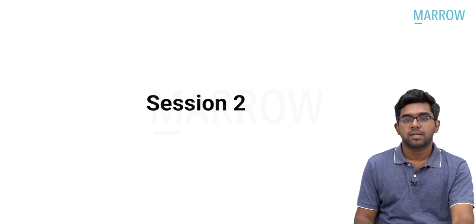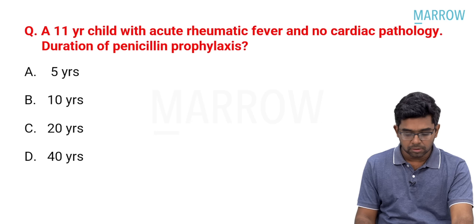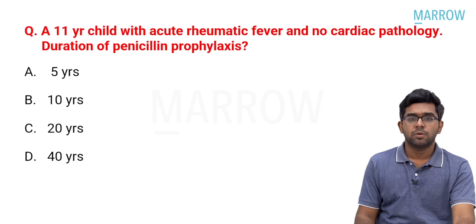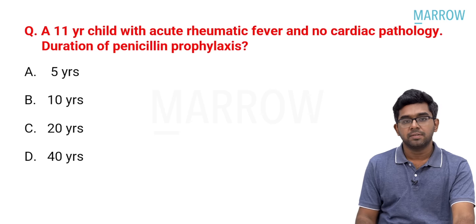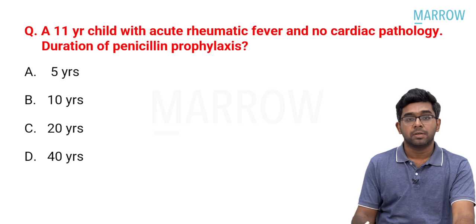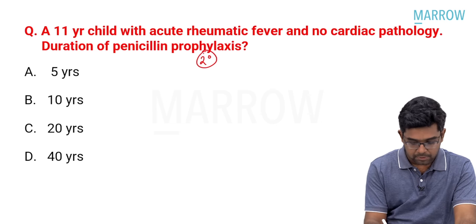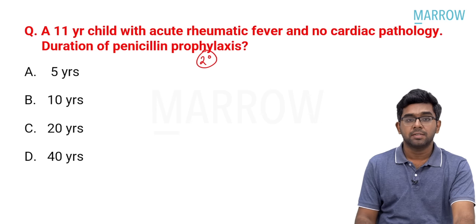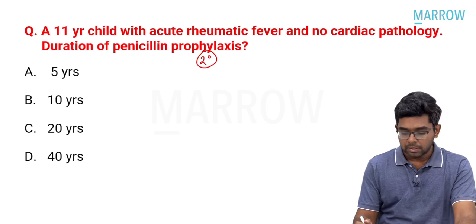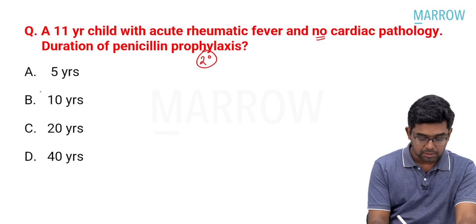Now the questions from the next session. An 11-year-old child with acute rheumatic fever and no cardiac pathology — what should be the duration of penicillin prophylaxis? This is a repeat question. Acute rheumatic fever requires prophylaxis to prevent a second episode, called secondary prophylaxis, because recurrence causes even more severe cardiac damage. The duration depends on whether the child has cardiac involvement. In this question, there is no cardiac pathology, so prophylaxis duration is five years.